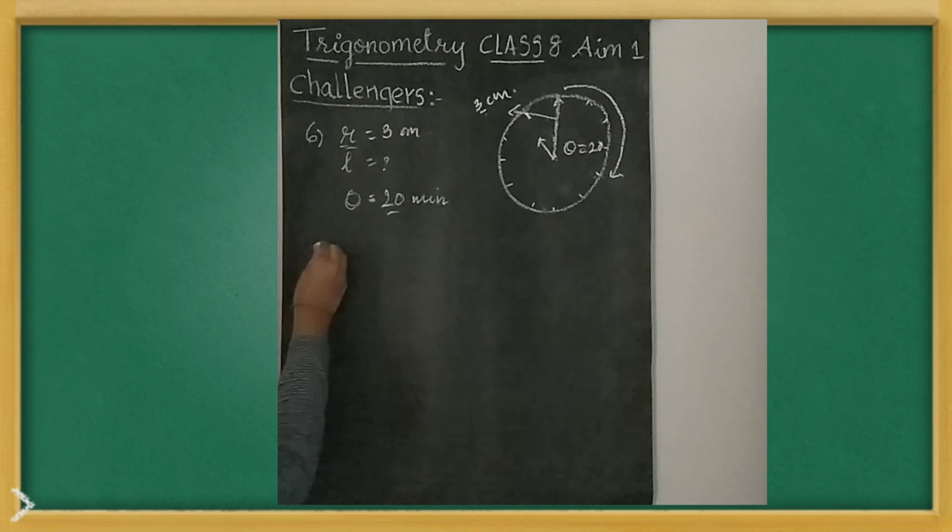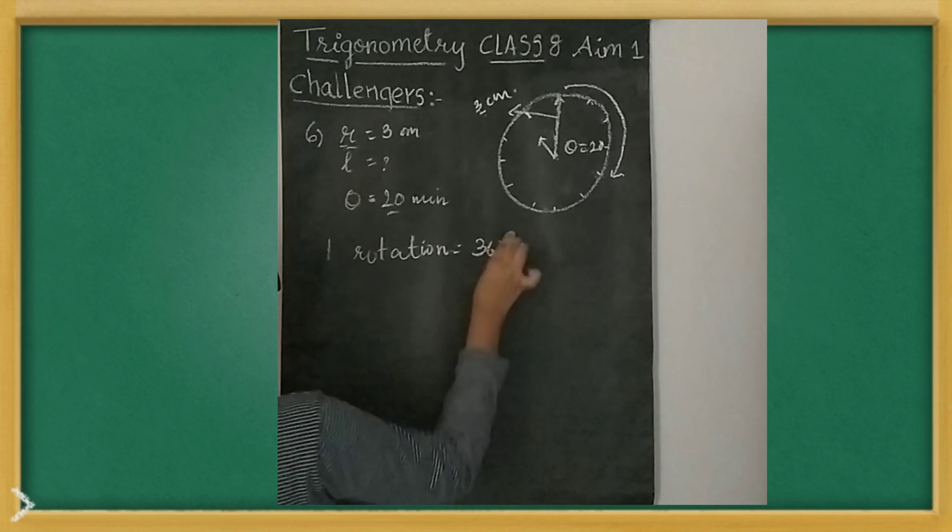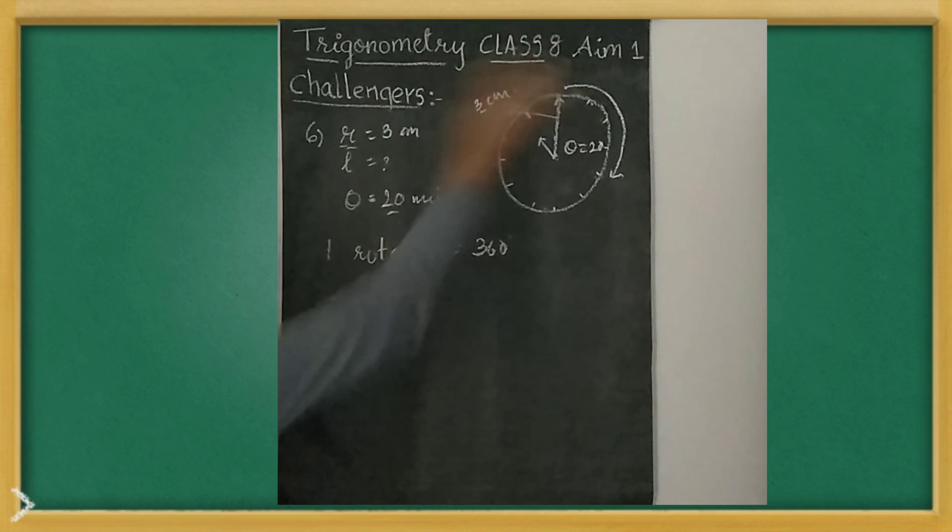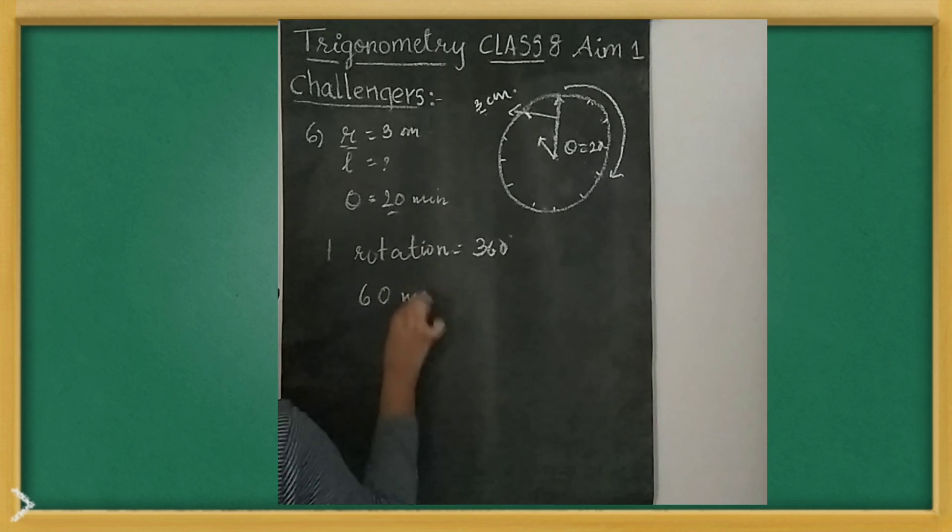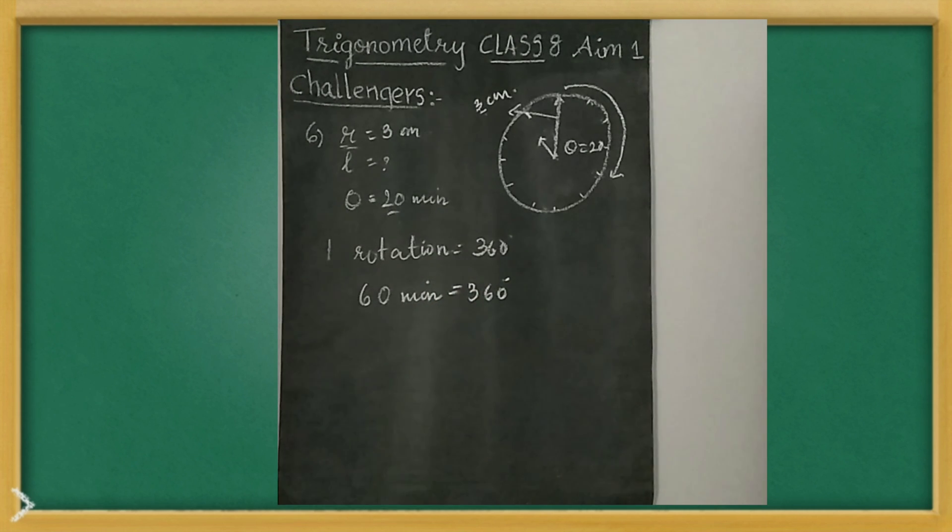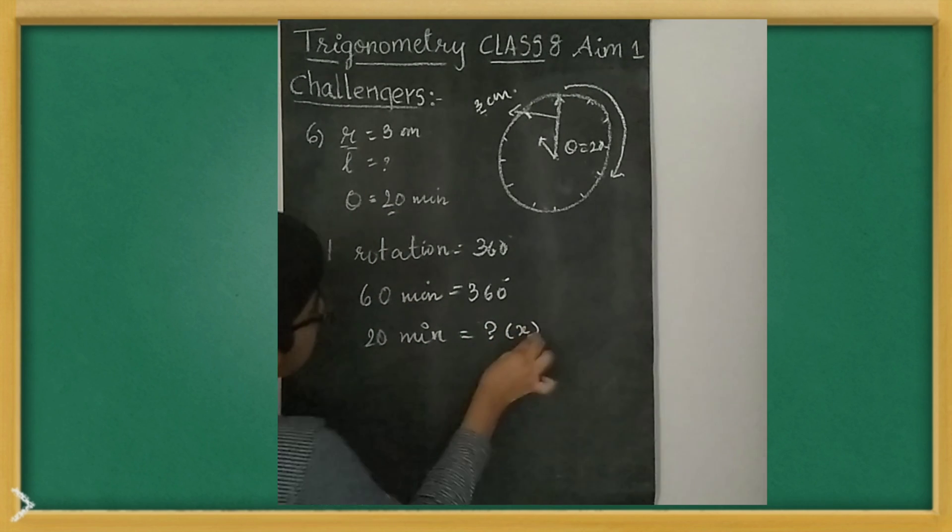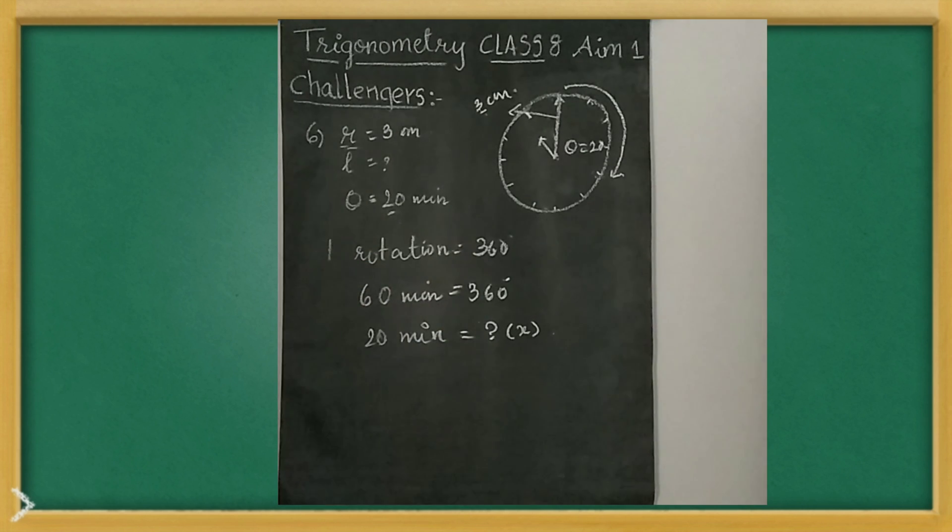First, we know this formula, right? One rotation is 360 degrees. We all know this fully when we rotate. One rotation means what? 60 minutes is 360 degrees. Now, what will be 20 minutes? Angle will be final. That's why 20, we consider that as x. What we will do? Cross multiply.